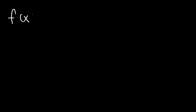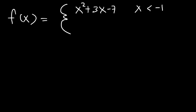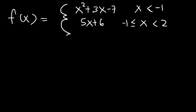Let's work on some more examples. Let's say we have the function f of x, and it's equal to x squared plus 3x minus 7 when x is less than negative 1. It's equal to 5x plus 6 when x is greater than or equal to negative 1 but less than 2. It's equal to x cubed plus 4 when x is greater than 2, and it's equal to 12 when x equals 2.